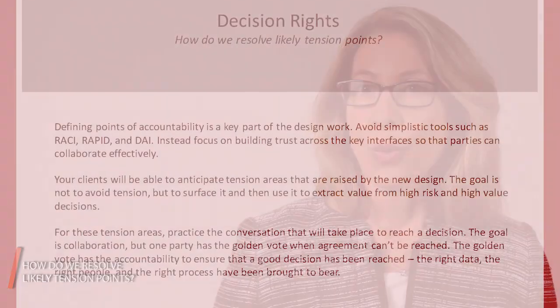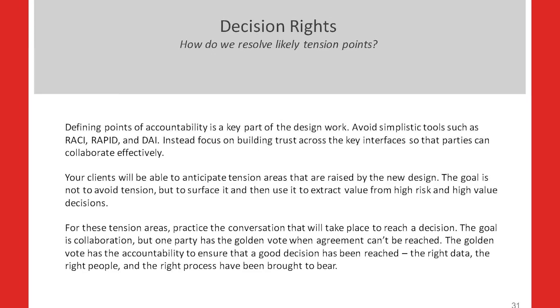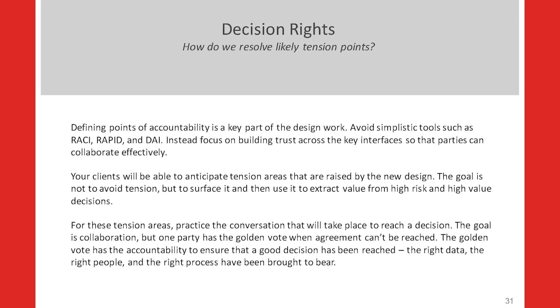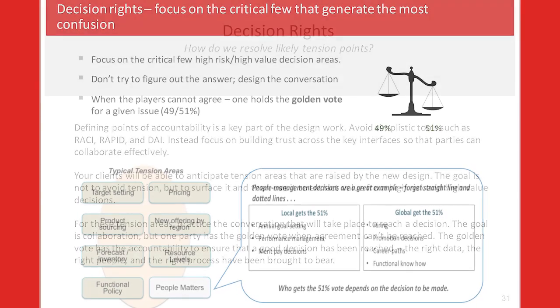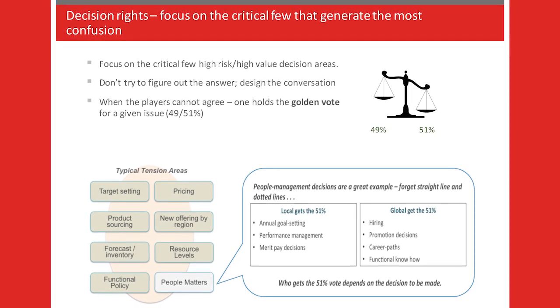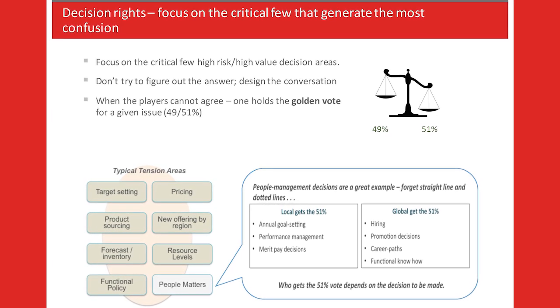The seventh part of our toolkit is resolving tension points. All organization designs create tension. What we want to make sure is that we have the right people around the table, we have a way to resolve this tension, and at the end of the day, one role is responsible and accountable for the quality of that decision. We call this the golden vote in decision rights. Working these through as part of the design process is critical to ensuring that the organization functions.